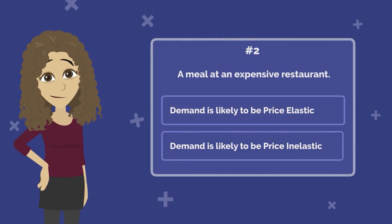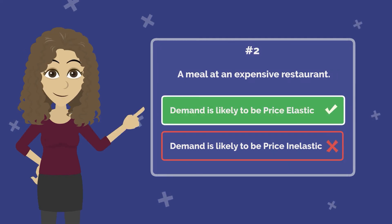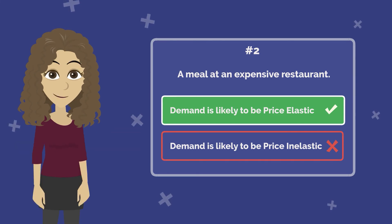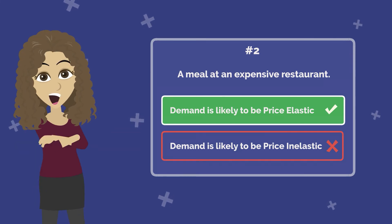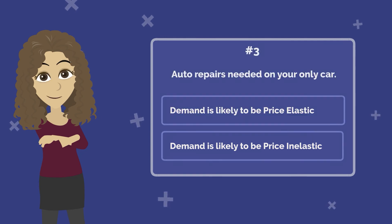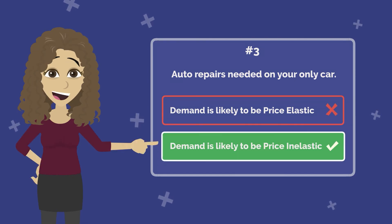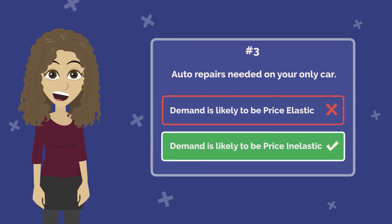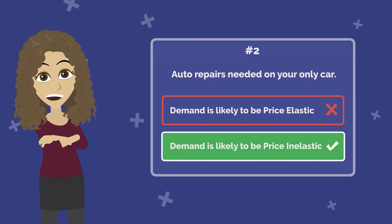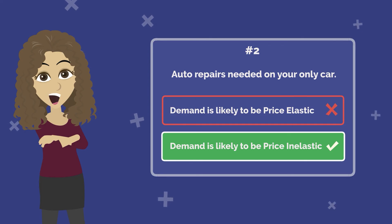Number 2: A meal at an expensive restaurant. Answer: Demand is likely to be price elastic. Why? Because you are giving up a large portion of your food budget. Number 3: Auto repairs needed on your only car. Demand is likely to be price inelastic. Why? Because it could be a necessity if you rely on your automobile to get to work or school.